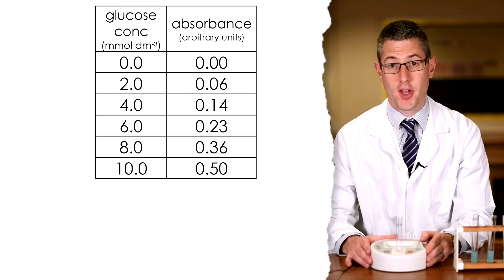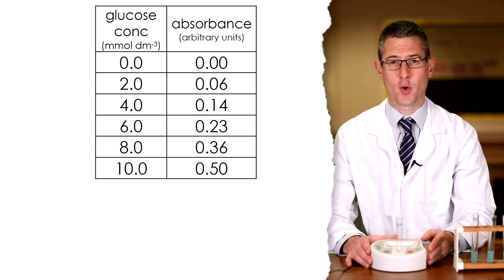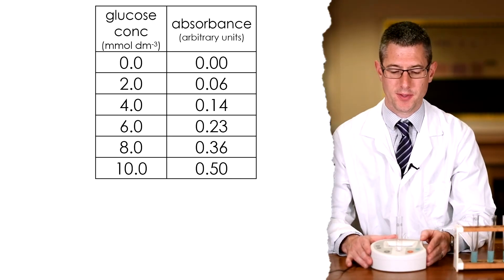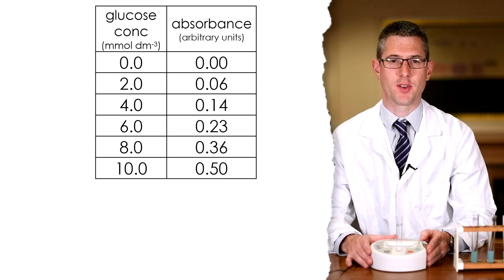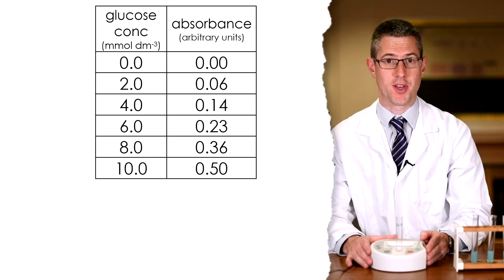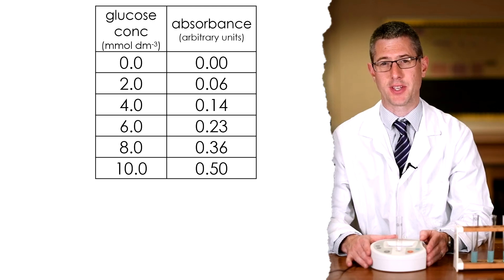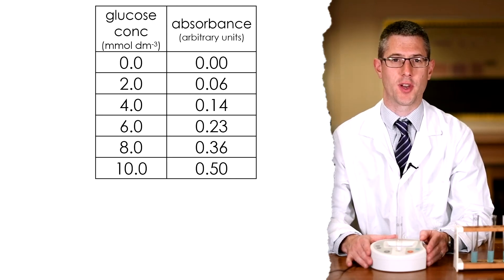So now having measured all of my known glucose concentration samples, I've got a quantitative readout of light absorbance. We have to now measure the absorbance readings of the unknown urine samples to get a quantitative reading that can allow us to calculate what concentration of glucose is in those samples.